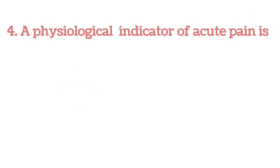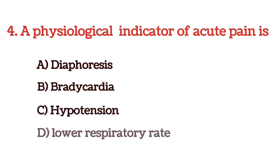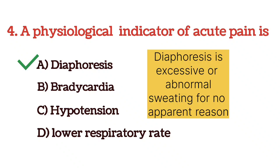Next question: a physiological indicator of acute pain is — options are diaphoresis, bradycardia, hypotension, and lower respiratory rate. The answer is option A, diaphoresis. Diaphoresis means excessive or abnormal sweating for no apparent reason. It is a physiological indicator of acute pain.